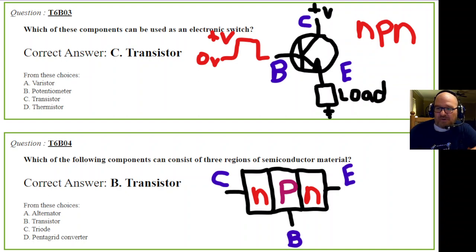Question 4: Which component consists of three regions of semiconductor material? I don't know why they didn't ask about two regions - a diode would be two regions. But a transistor has three regions: N, then P, then N. You can see I drew the collector, base, and emitter. It's a whole other class to talk about how transistors actually work.